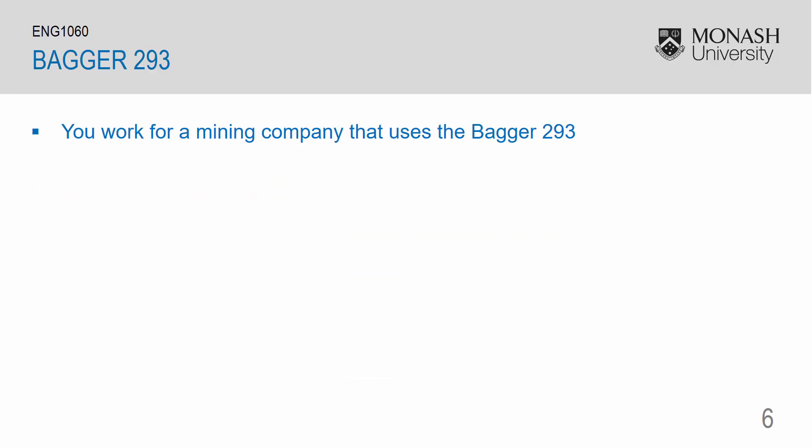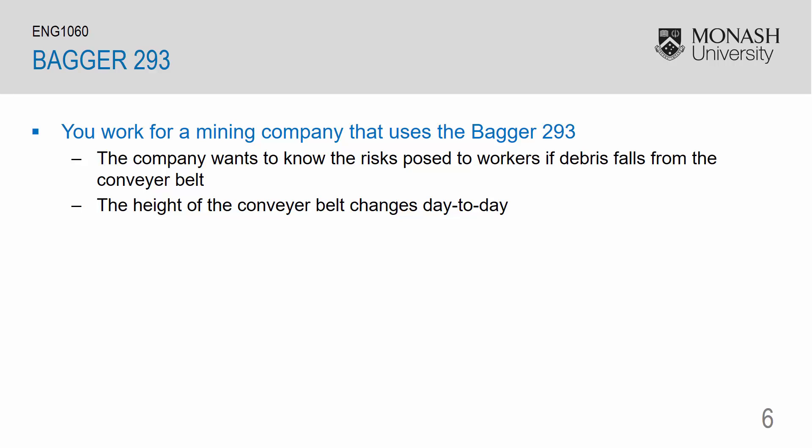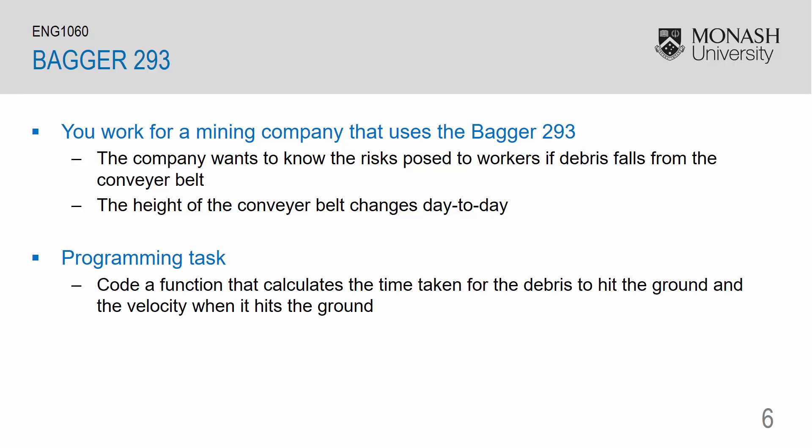So you work for a mining company that uses the Bagger 293. And the company wants to know the risks posed to the workers if debris were to fall from the conveyor belt. The height of the conveyor belt changes day to day and therefore the risks will change day to day. Your programming task is to code a function that calculates the time taken for the debris to hit the ground and the velocity when it hits the ground. Also note that your function must work with vector inputs.